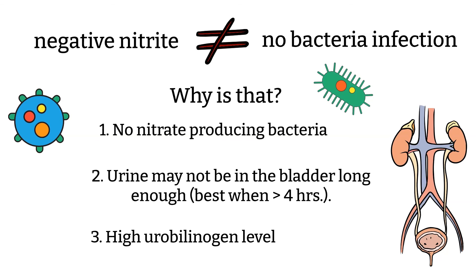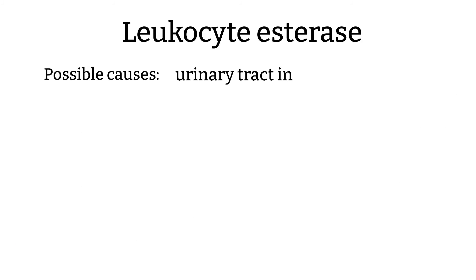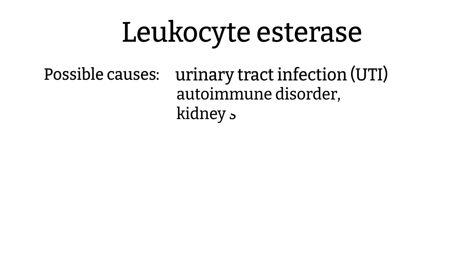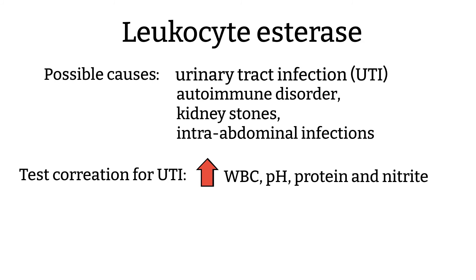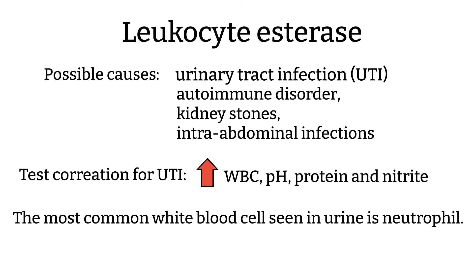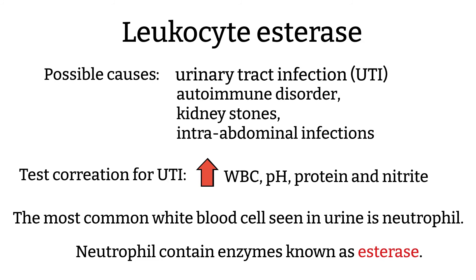Leukocyte esterase. An increased number of white blood cells is one indicator of urinary tract infections. Usually, for a UTI, you will also have an increase in white blood cells, elevated pH, protein, and nitrite. The most common white blood cell seen in urine samples is the neutrophil. Neutrophils contain enzymes known as esterase. This esterase is what is used to detect the presence of white blood cells — that's why the test is called leukocyte esterase.